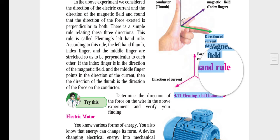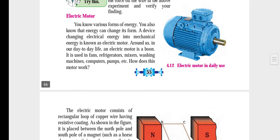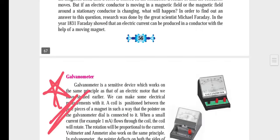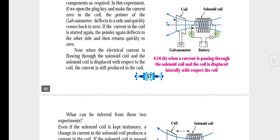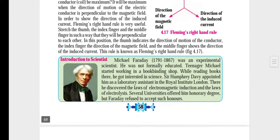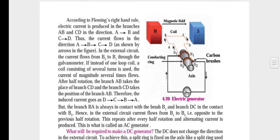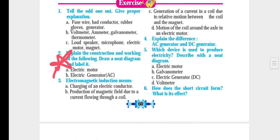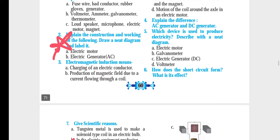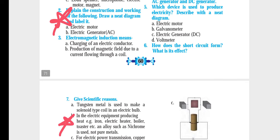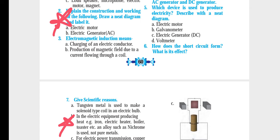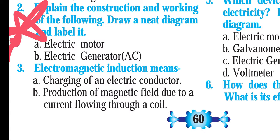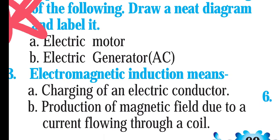Page number 54, and again on page number 55 we have thumb rules. On page number 57 we have galvanometer. Page number 57 is galvanometer, and on page number 60, question number 2: explain the construction and working of electric motor and electric generator — draw a neat and labelled diagram.